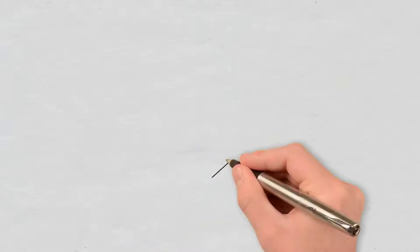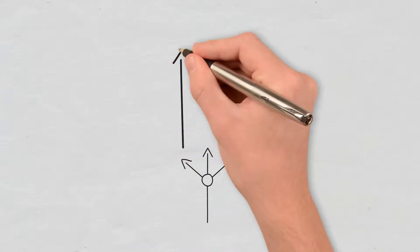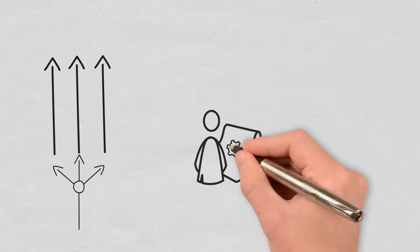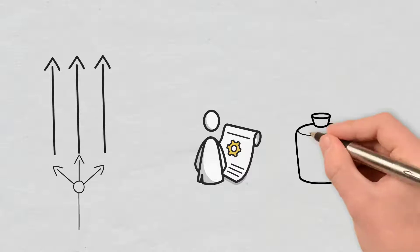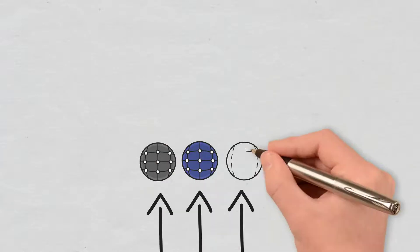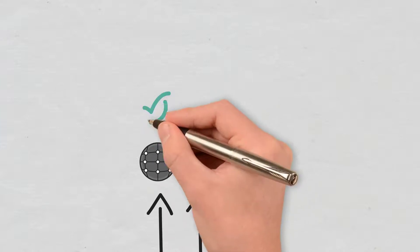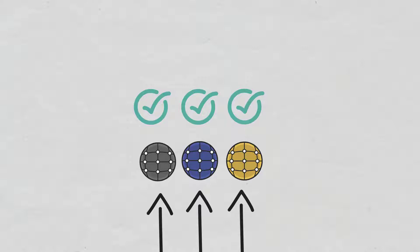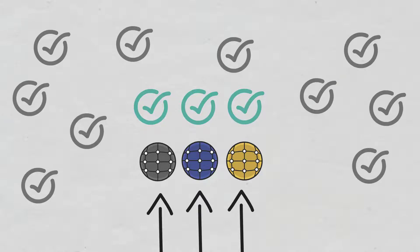By breaking the blockchain network into individual segments, aka shards, each segment is going to have a unique set of smart contracts and account balances. Furthermore, nodes are then assigned to individual shards in order to verify transactions, instead of having them responsible for checking every transaction on the entire network.